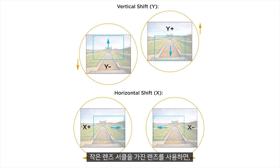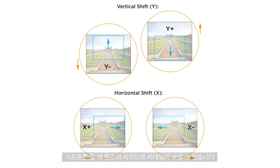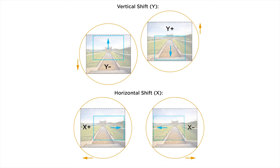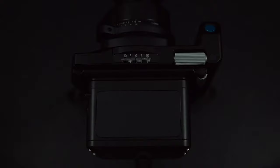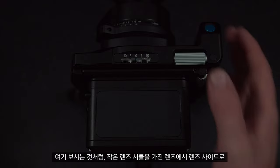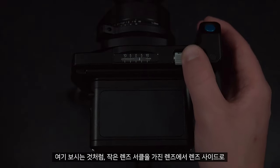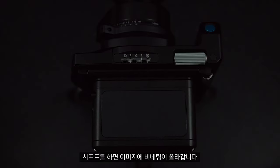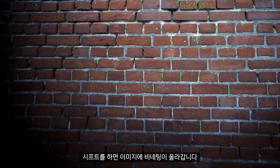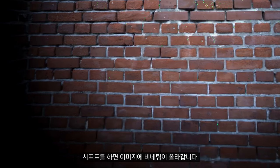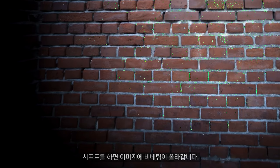If we are using a lens with a smaller lens circle, when we shift we may see some vignetting on the side of the lens. As we can see here, on a lens with a smaller lens circle, as we shift towards the edge we will see a vignette appear in our image.